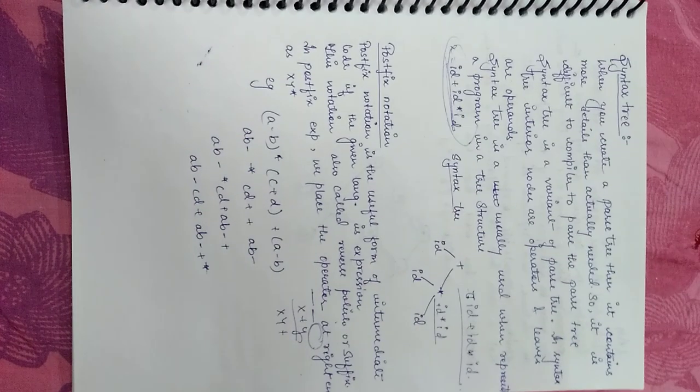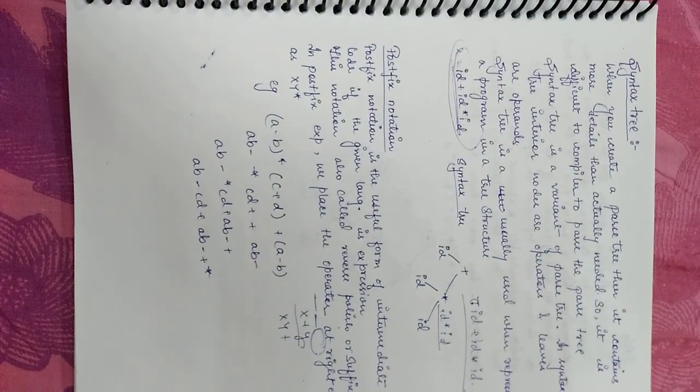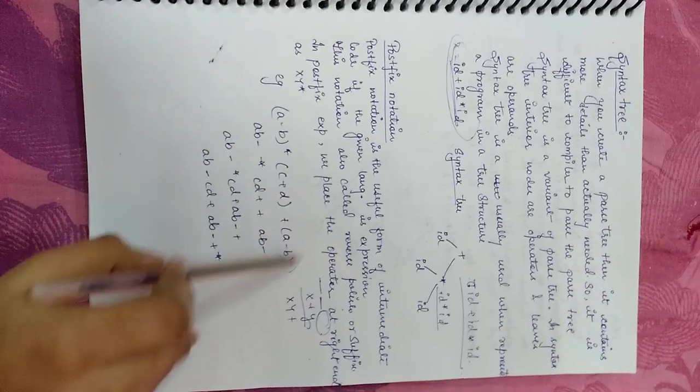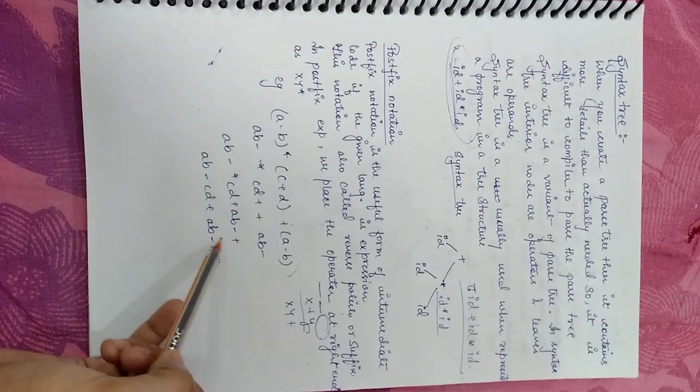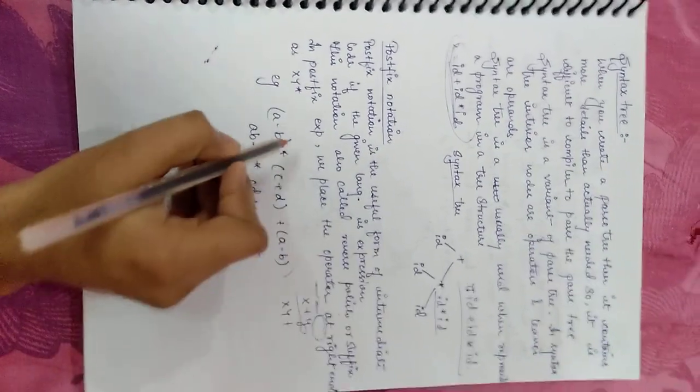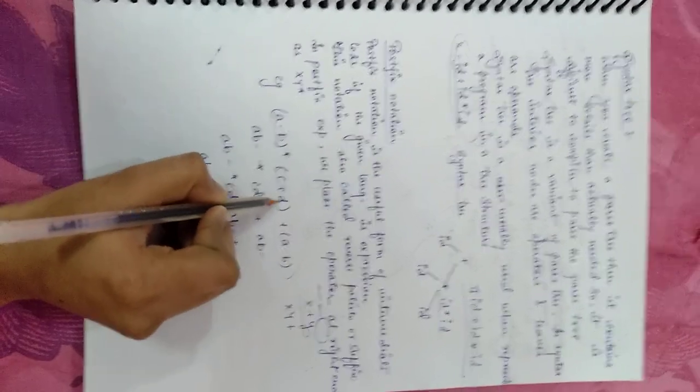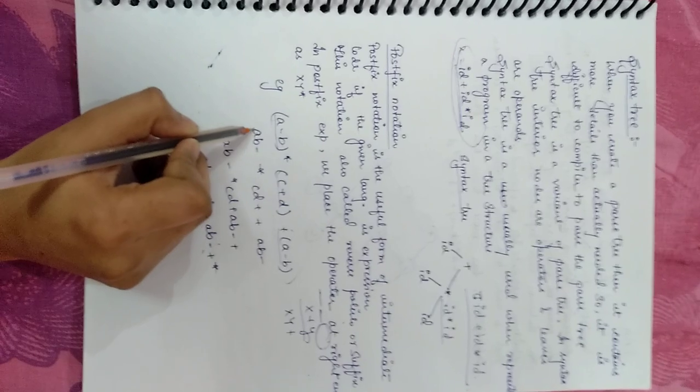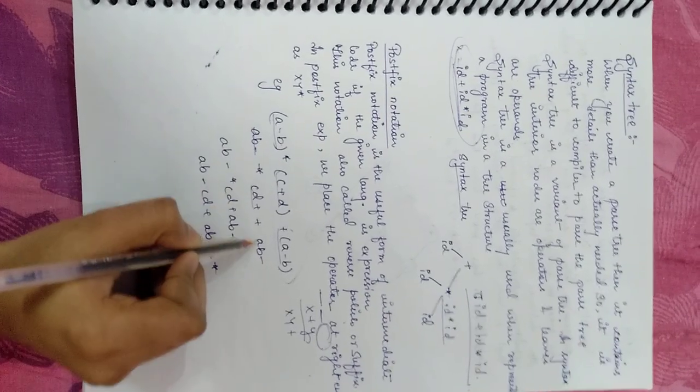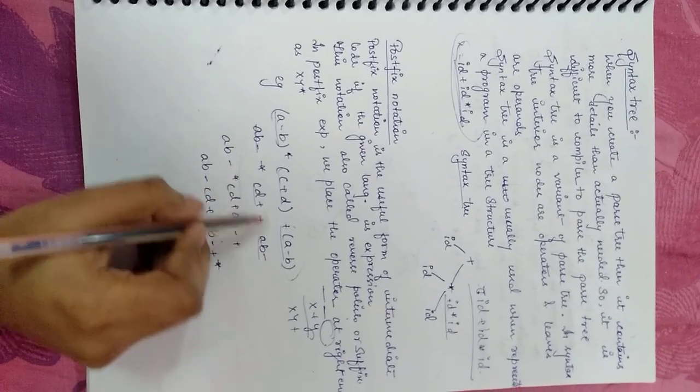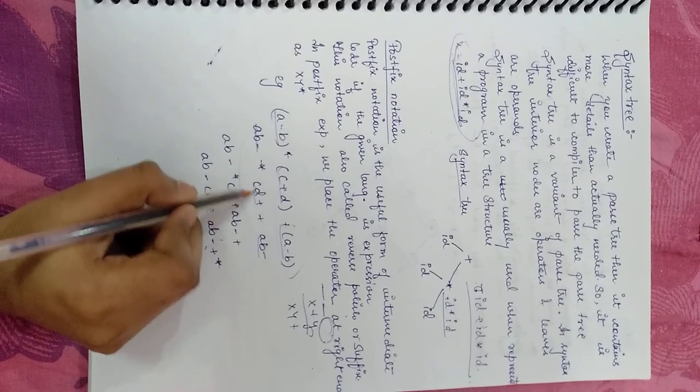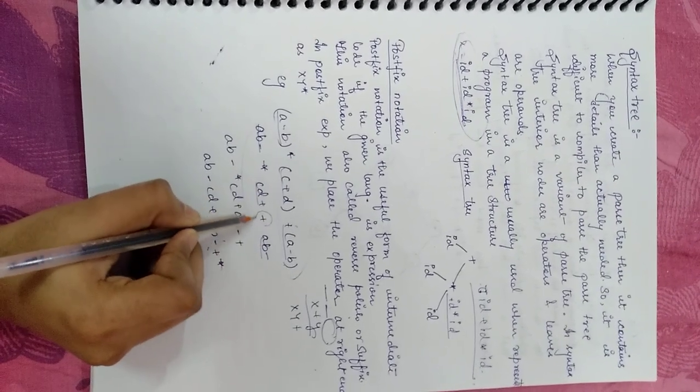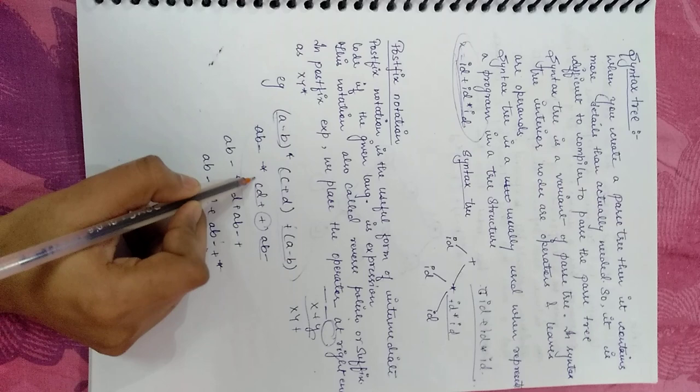We also use this expression, we have the same expression. How do we create this postfix notation? First of all we have to solve brackets, we have the priority of brackets. So what do we have to do? In brackets, what is A minus B, then we have to denote it in postfix. Now which operator is between these two, which operator is this operator, so this is solved.